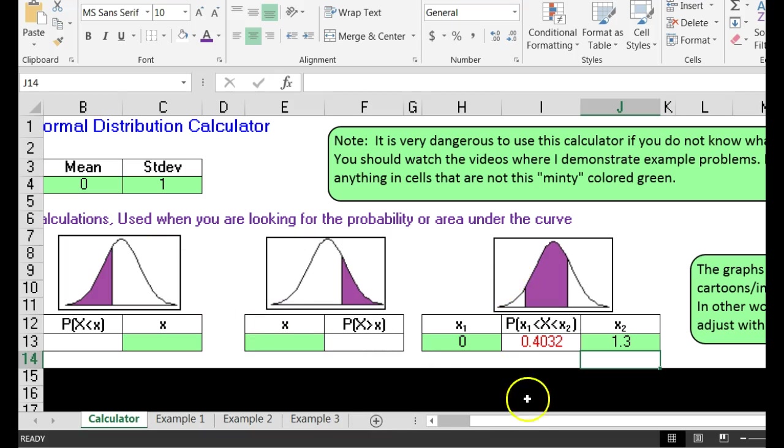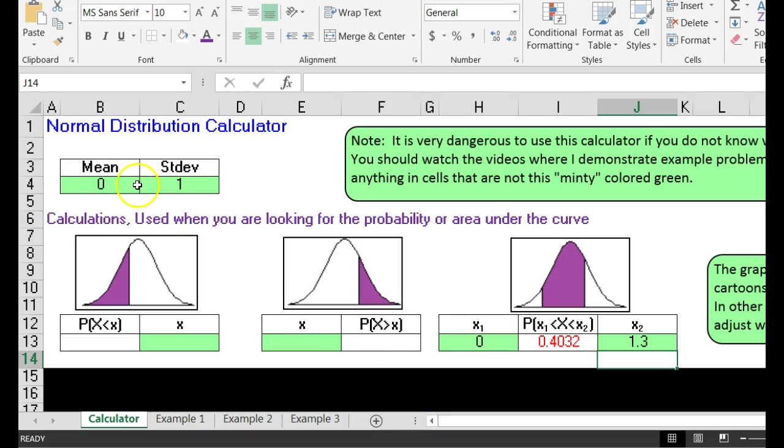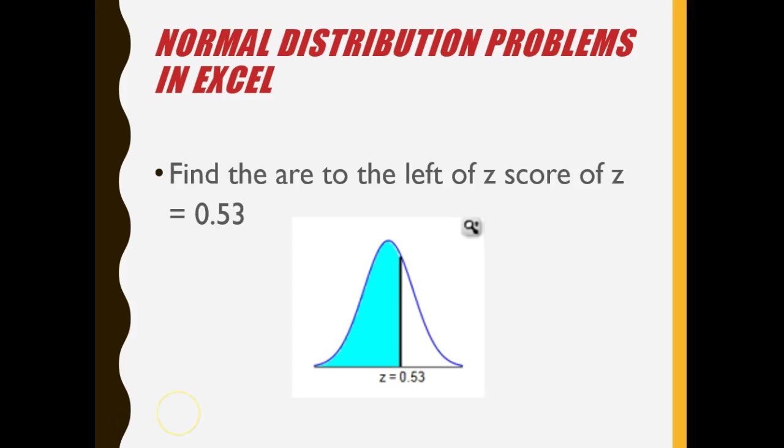But when I'm dealing with z-scores I put in a mean of zero, a standard deviation of one. What about this one? Find the area to the left of a z-score of 0.53.